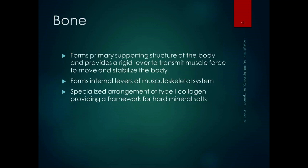Bone forms the primary supporting structure of the body and provides a rigid lever to transmit muscle force to move and stabilize the body — those are our bony levers, the internal levers of the musculoskeletal system. A large amount of bone is made up of type 1 collagen — the tough kind — which provides the framework for phosphorus and calcium salts to be stored in. There's so much collagen in bone that it gives us some bounce.